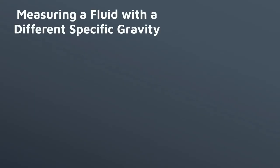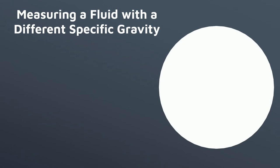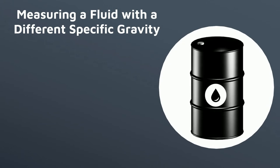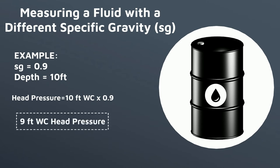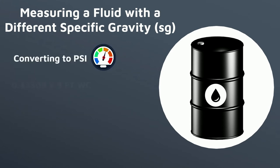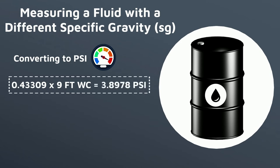If you are measuring a fluid that has a different specific gravity, such as oil, you need to find the specific gravity and calculate your total head pressure. Using our example above, if the specific gravity was 0.9 and the depth is 10 feet, head pressure would equal 10 feet times 0.9, giving a water column head pressure of 9 feet. Converting to psi would equal 0.433 times 9 feet of water column, equaling 3.89 psi.